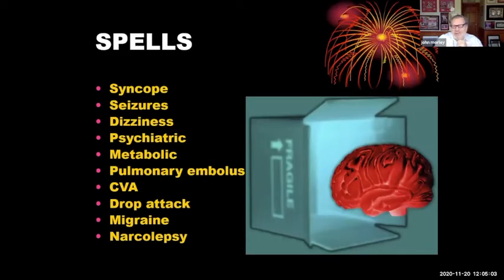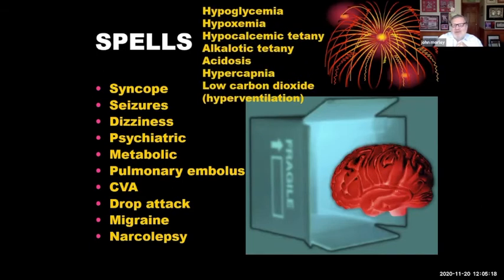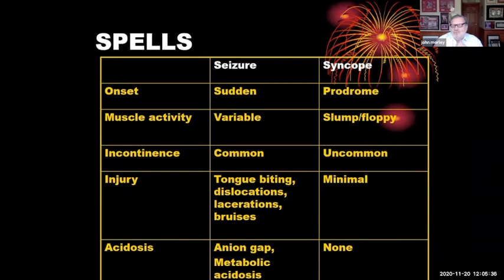This is the list of the major types of spells: syncope, seizures, dizziness, psychiatric, metabolic, pulmonary embolus, strokes, drop attacks, migraine, and narcolepsy. The metabolic causes include hypoglycemia, hypoxemia, hypercalcemic tetany, alkalotic tetany, acidosis, hypercapnia, low carbon dioxide, and hyperventilation. We're going to concentrate predominantly on the two major kinds, which are the seizures and the syncope.